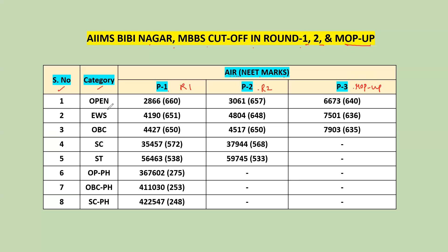There are different categories — a total of 8 categories. Open and general categories: OC, EWS, OBC. In the OBC portal: BC-A, B, C, D, E are separate categories. They are all under OBC. OBC is non-creamy layer. There is a lot of variation between OPC and non-creamy layer categories.